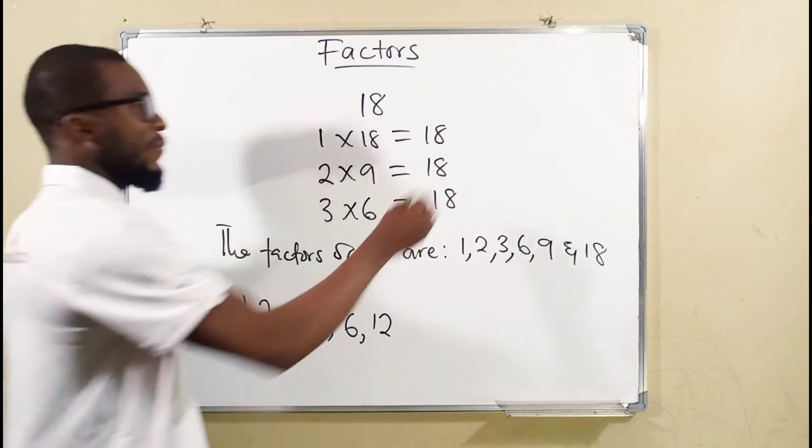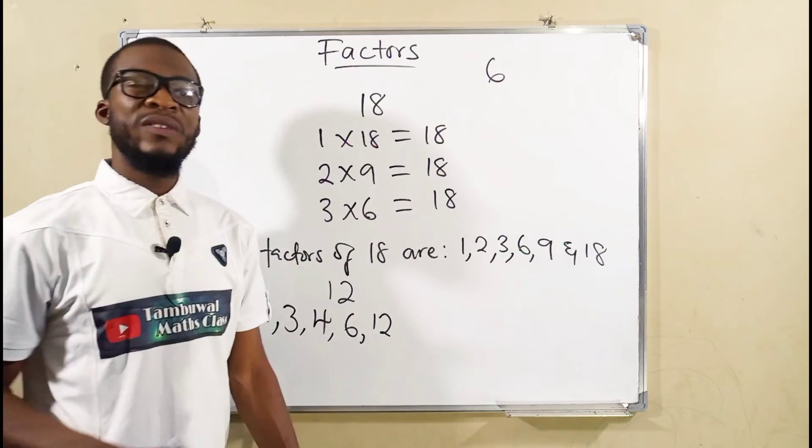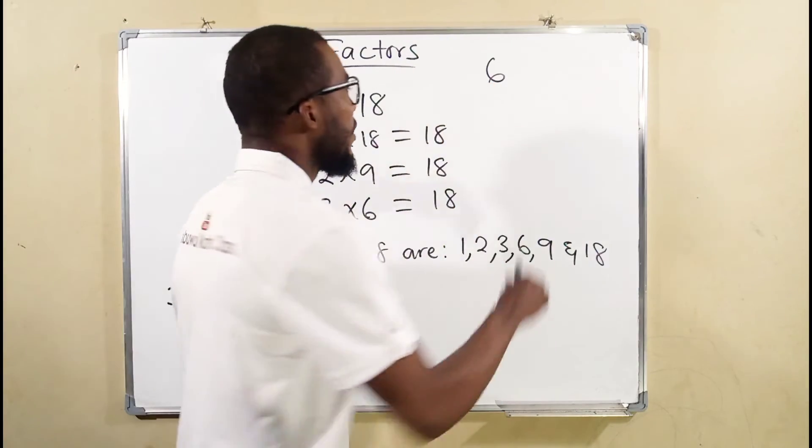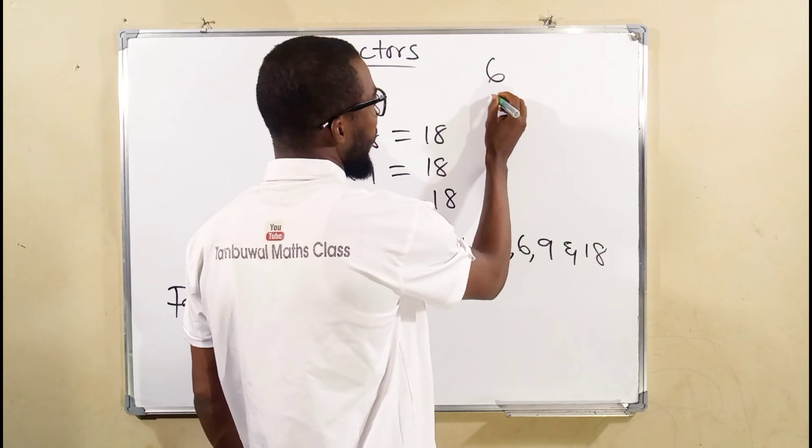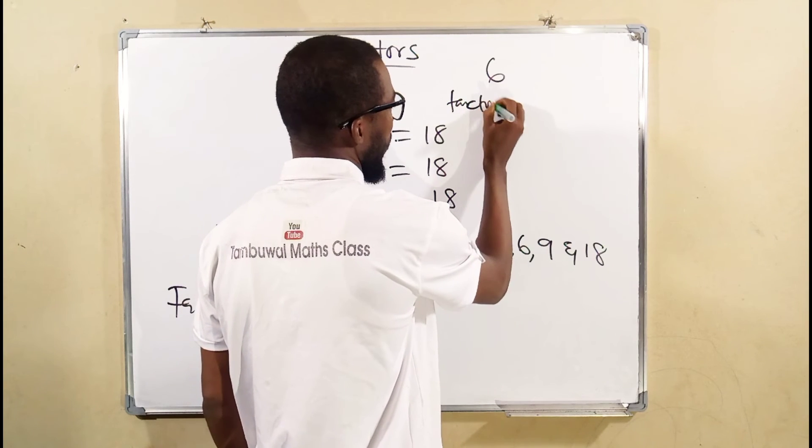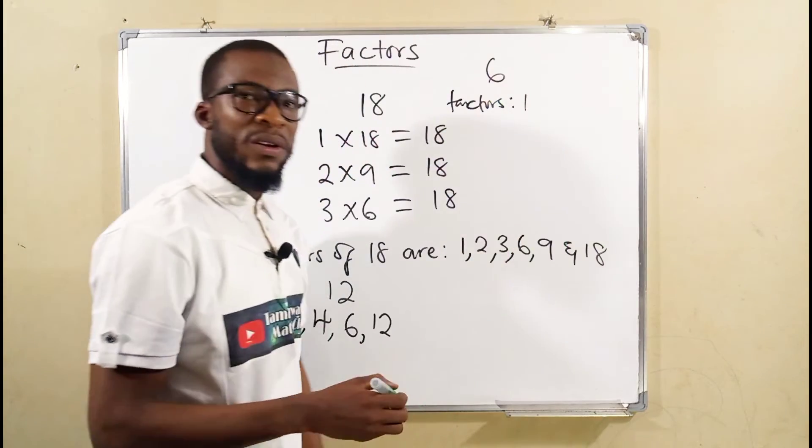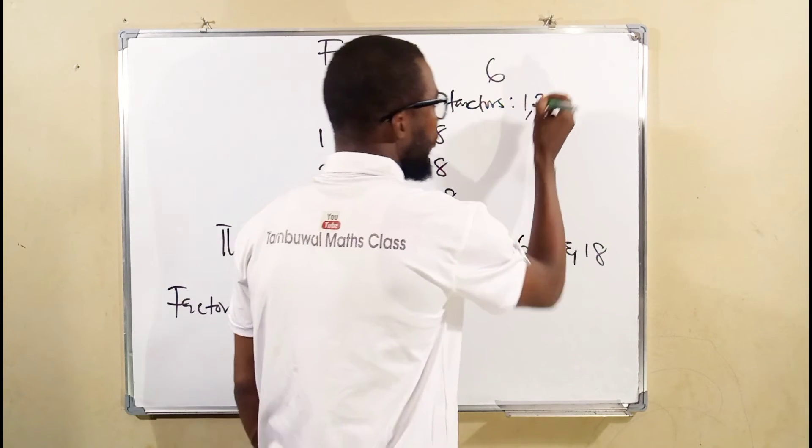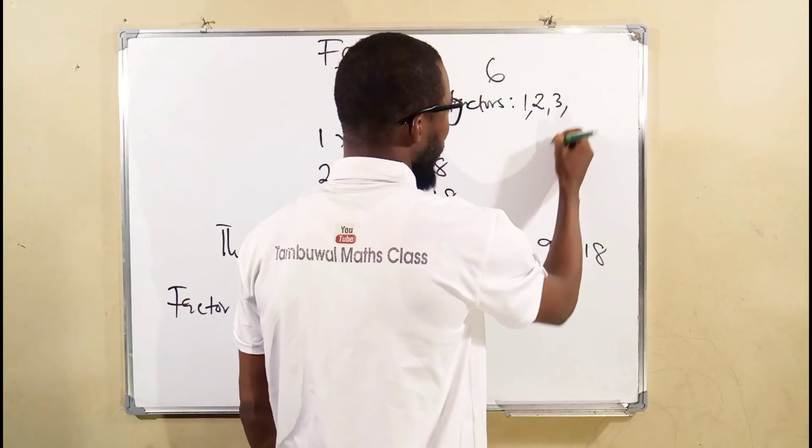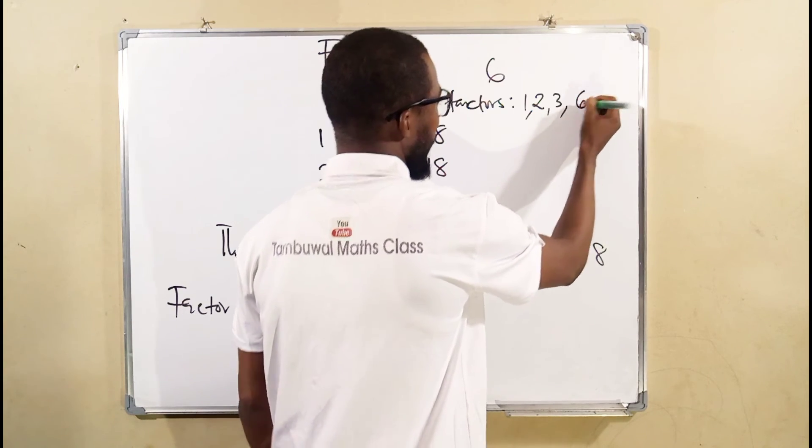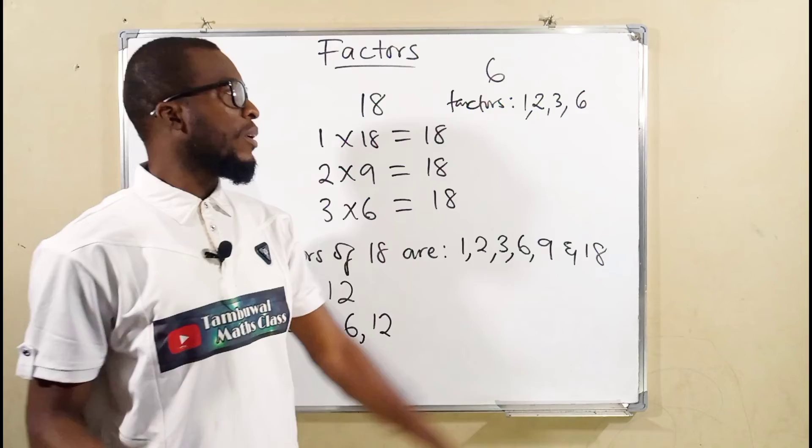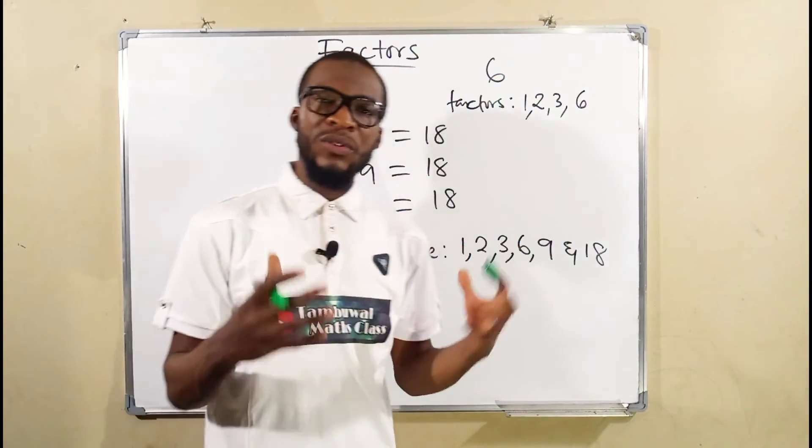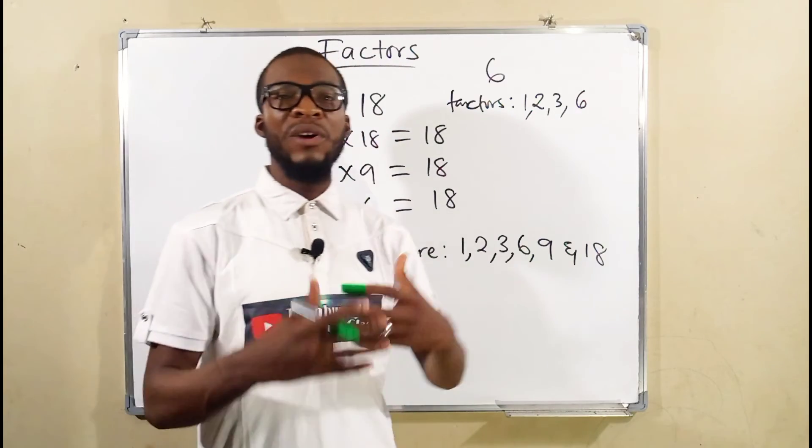If we take 6 for instance, all those sets of numbers that can go into 6 without remainder are said to be the factors of 6. We have 1 can go into 6 6 times, 2 can go in there 3 times, 3 can go 2 times, and lastly 6 can go into 6 1 time. So 1, 2, 3, and 6 are all factors of 6. Knowing factors of numbers is very essential when it comes to factorization.